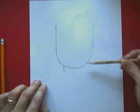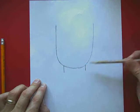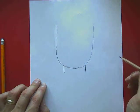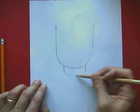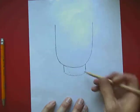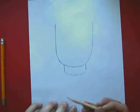Under my U I'm going to draw two short lines down and then I'm going to connect them with a curve. And that's going to give me my neck.